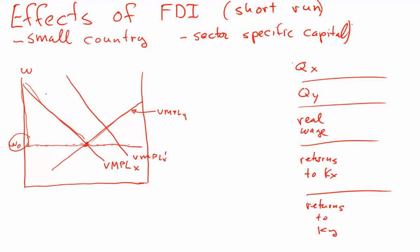Let's label the original point as point A, and here is the new point, point B, where the two value of marginal product of labor curves meet. The first thing you note is that the wage in this economy has gone up. Prices are remaining fixed and wages are rising, which means that the real wage is going to tend to go up.